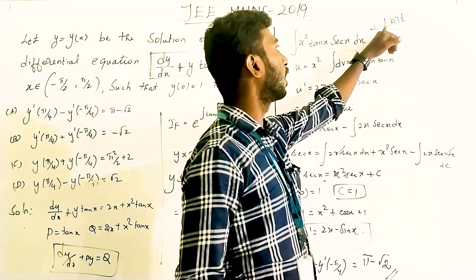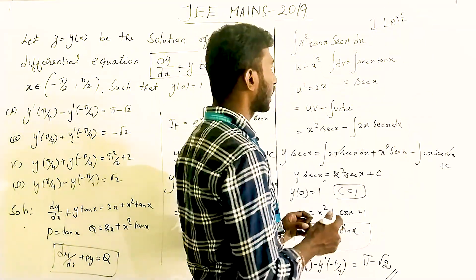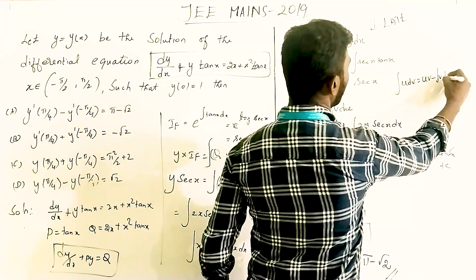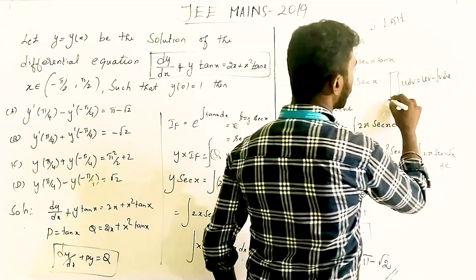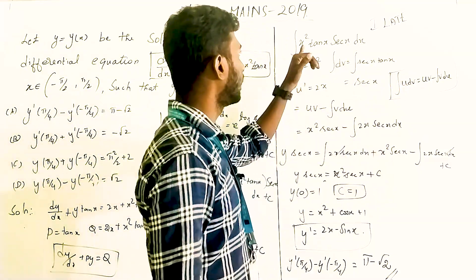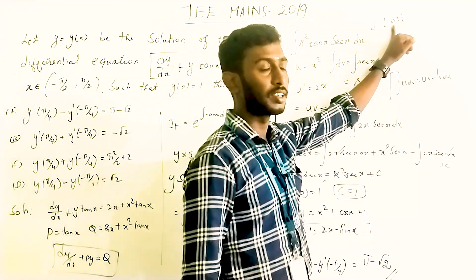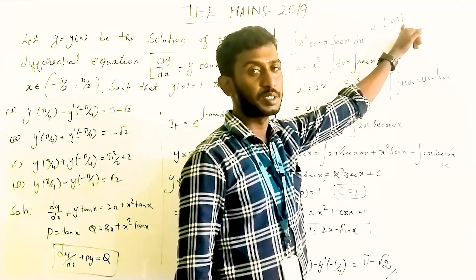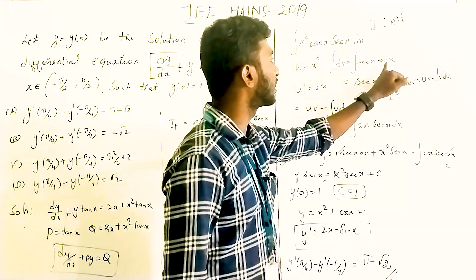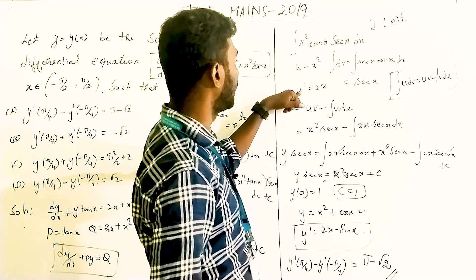For the second integral, we use integration by parts. The formula is ∫u dv = uv − ∫v du. We use the ILATE rule: algebraic function first, then trigonometric. So u = x² and dv = sec x·tan x dx.